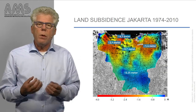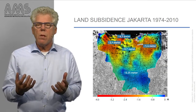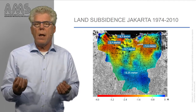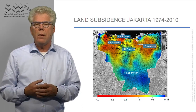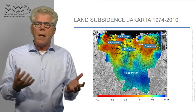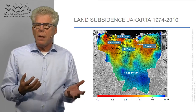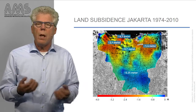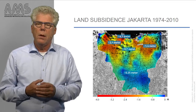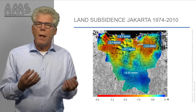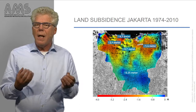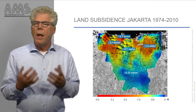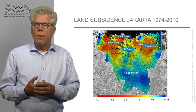One of the places in the world where these processes are creating a very strong subsidence is Jakarta in Indonesia. The current average land subsidence rate there is 7.5 to 10 cm per year along the coastline. Future population growth in the delta and the increasing need for drinking water are likely to aggravate the problems in Jakarta further.